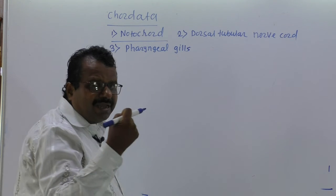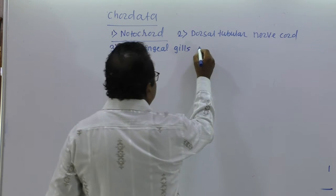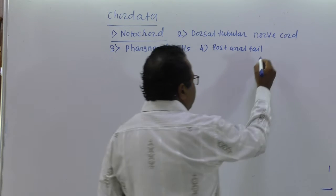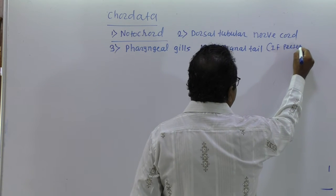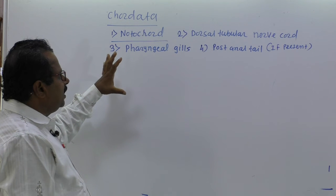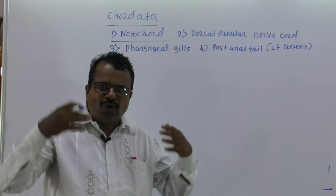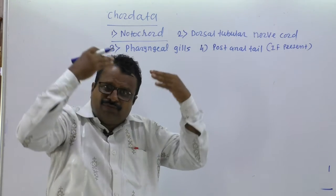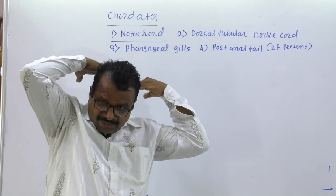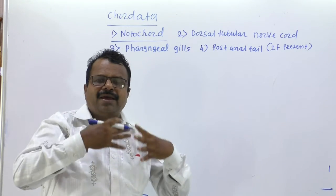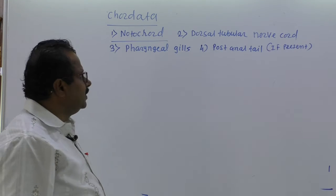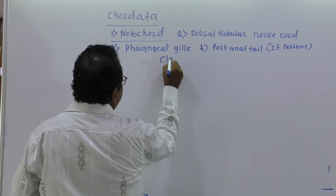These characters at least must be present in Chordata. Along with these, another character is the post-anal tail, but this character is not present in all. If present, we can see the post-anal tail. Also, in non-Chordates the dorsal tubular nerve cord is ventral, but in Chordates it is dorsal. In non-Chordates, the heart is on the dorsal side, but in Chordates our heart is on the ventral side of the body.